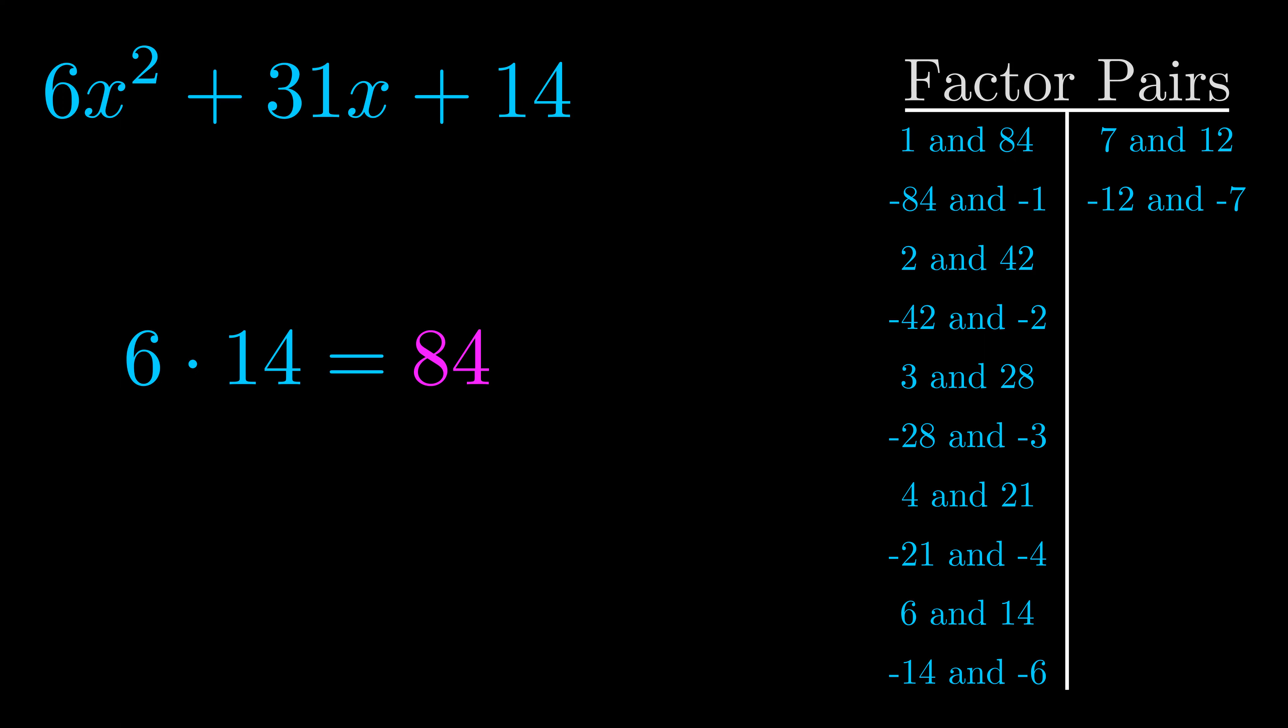The b value is the coefficient on the x term. That's the middle term, the one that we haven't done anything with yet. And really this is the only factor pair that we need.